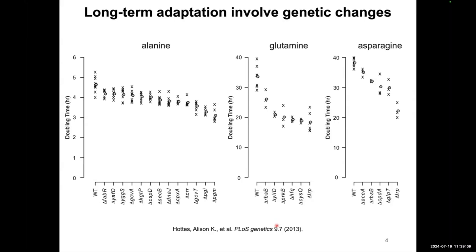However, if the environment is changed for long enough, bacteria can also go through genetic changes for adaptation. In this example, these are mutations in one specific gene. When you put these mutants in specific nutrient conditions, they can even be beneficial for the cells — all these mutants have lower doubling time, meaning they grow faster compared to the wild type strain.